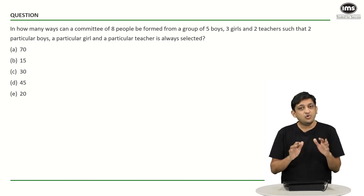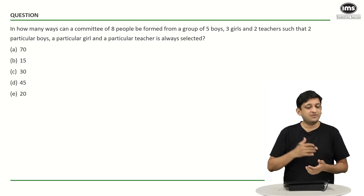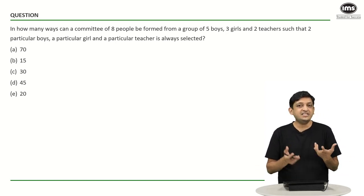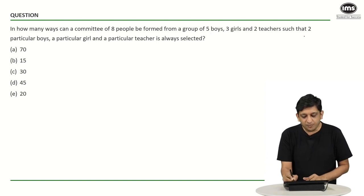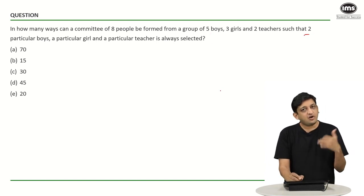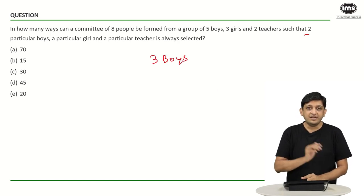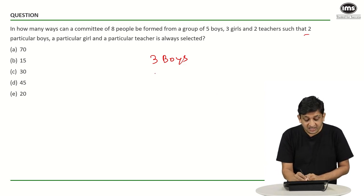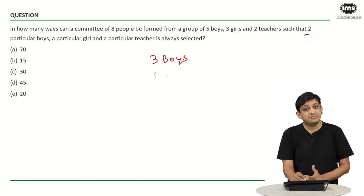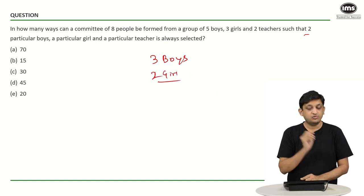We also know that there is no cap on the number of boys, girls, or teachers that should be there. So out of five boys, two particular boys are already in the committee — how many boys remain? Three boys. From three girls, one particular girl has already been assigned to this committee, so we have two girls left.